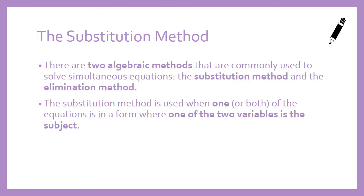There are two algebraic methods that are commonly used to solve simultaneous equations: the substitution method and the elimination method. The substitution method is used when one, or both, of the equations is in a form where one of the two variables is the subject.